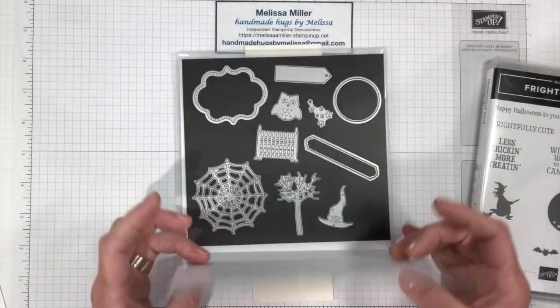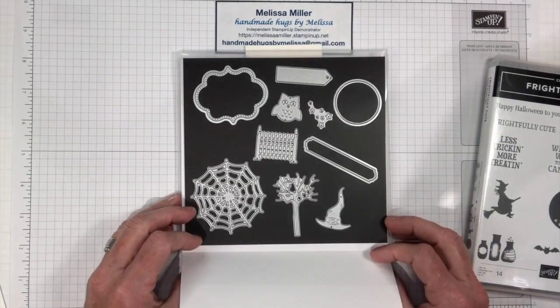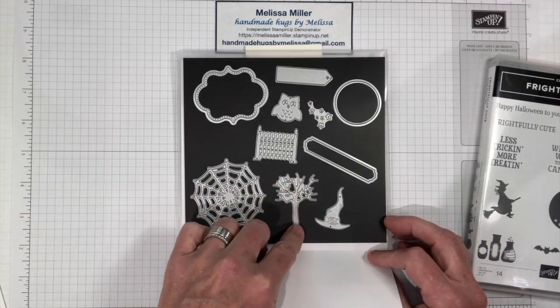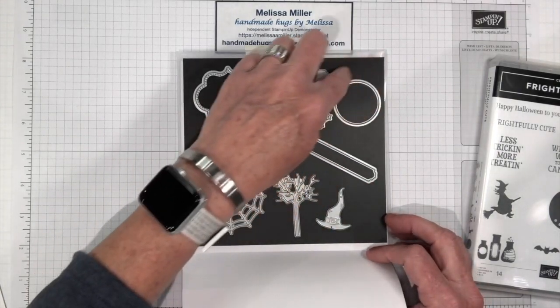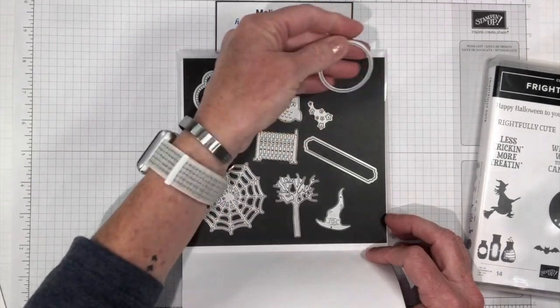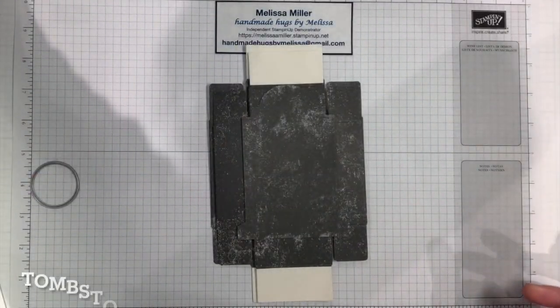We will also be using our die set which is called Frightful Tags Dies. We will be using the tree, the fence, our sentiment strip, and also the circle for the moon.